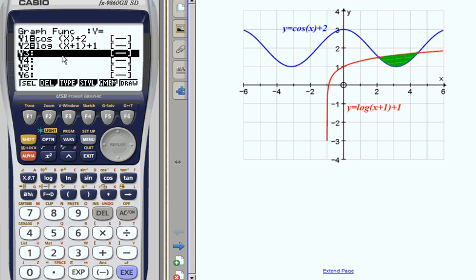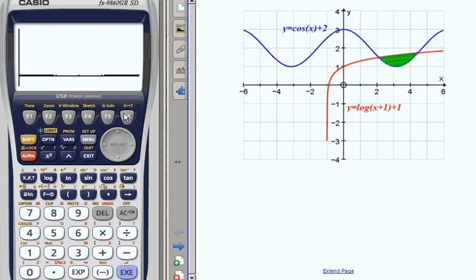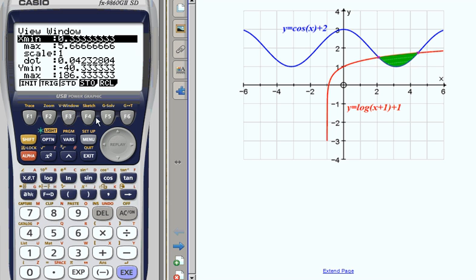So now we've got the graphs there, we can draw them. And we can see we can't see very much, so let's fix the view window to the same as what's in the graph in the question.